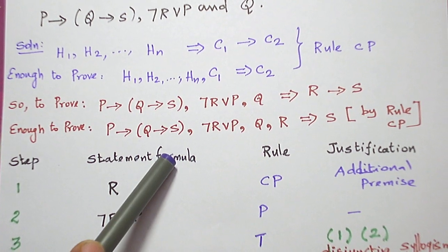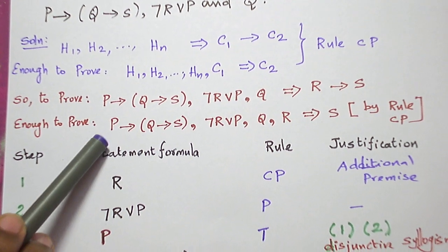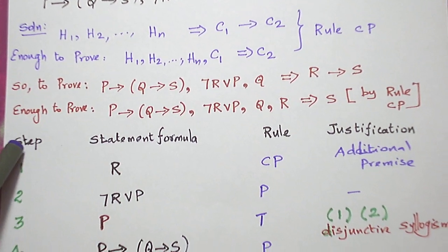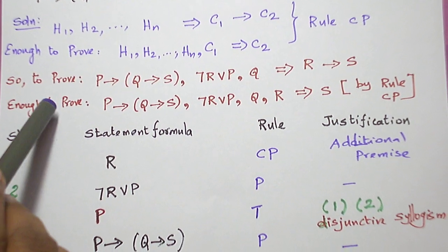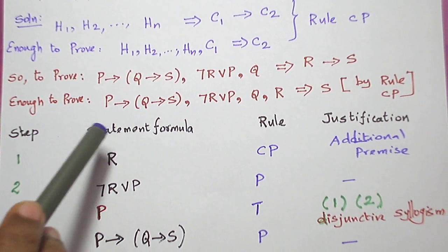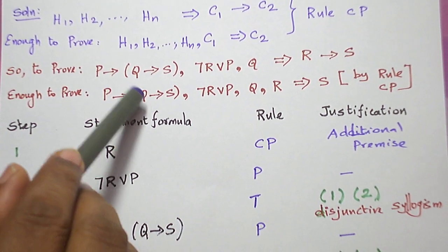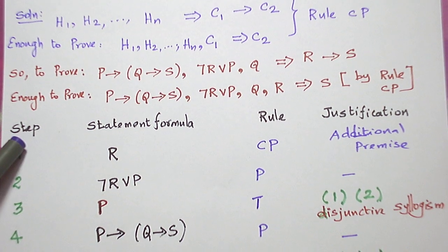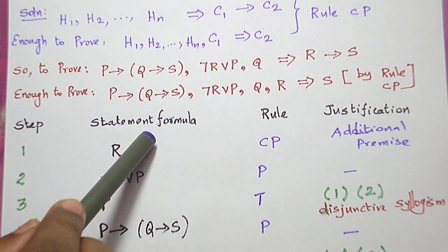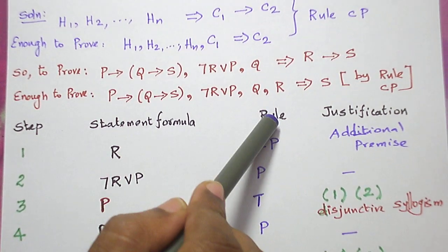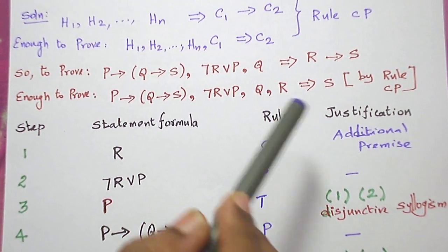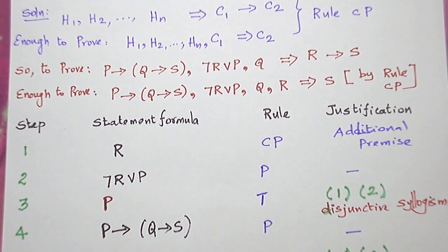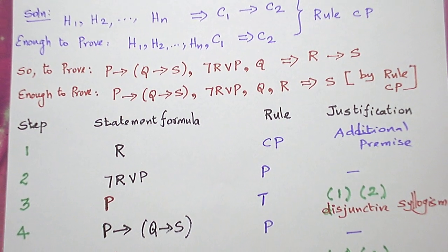Now I start the proof. I split the solution into four columns: first column for step, second column for statement formula, third column for rule, and fourth column for justification.